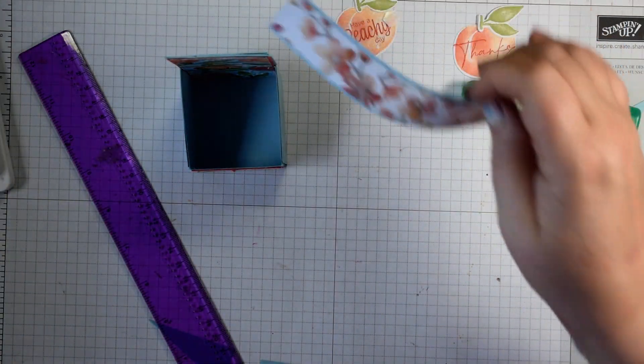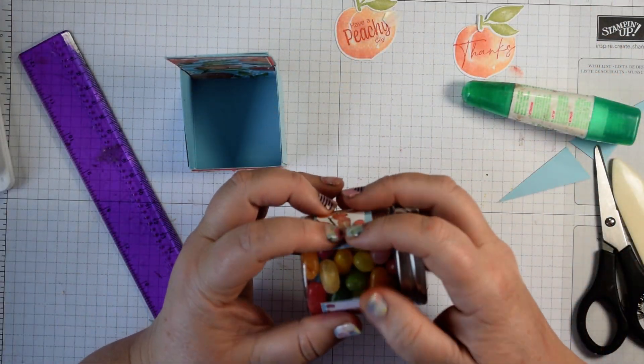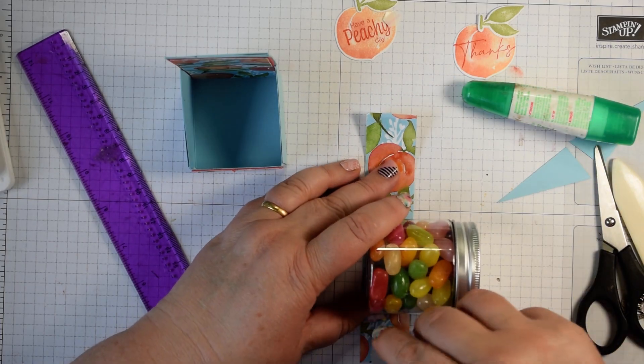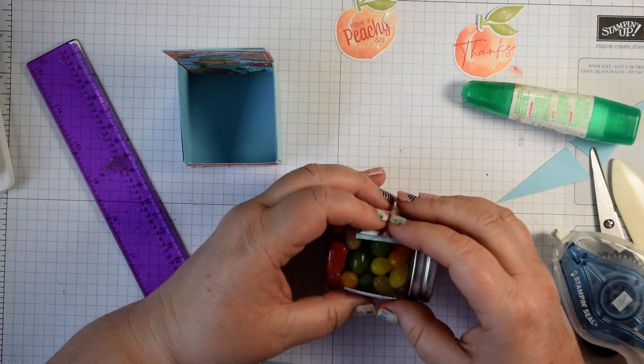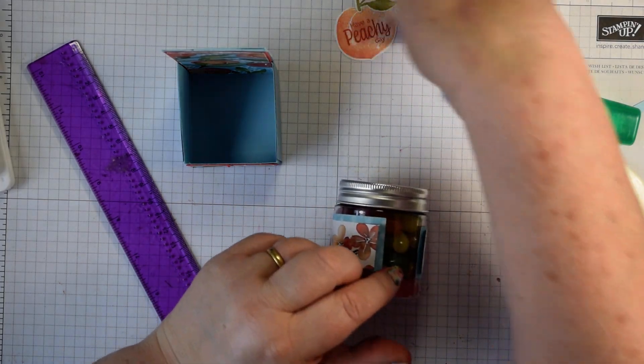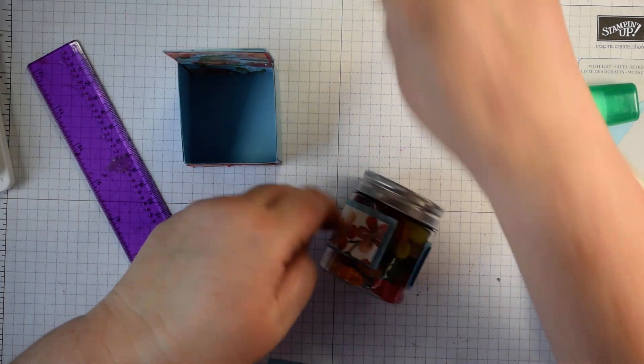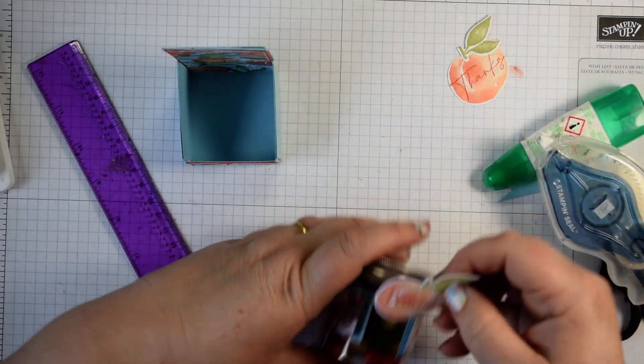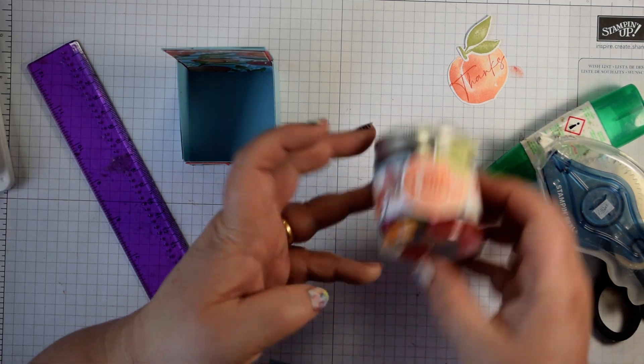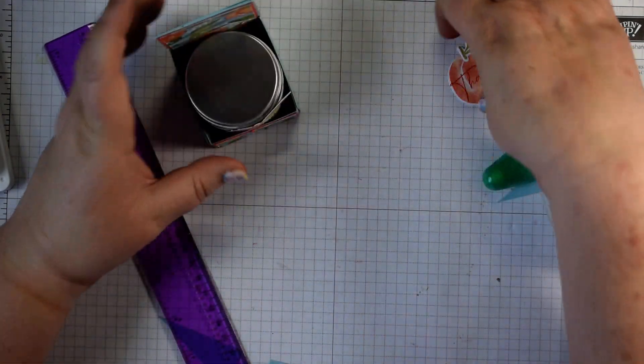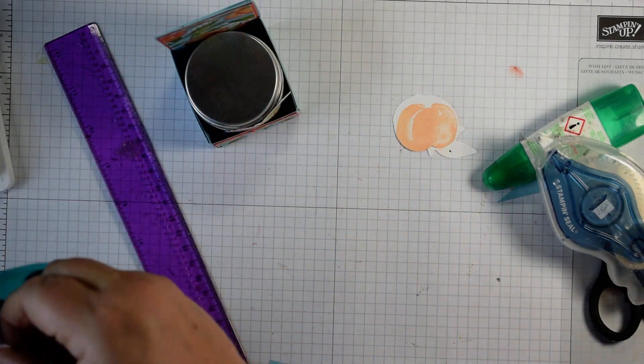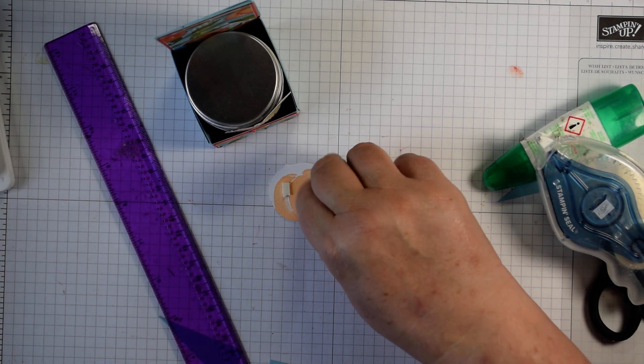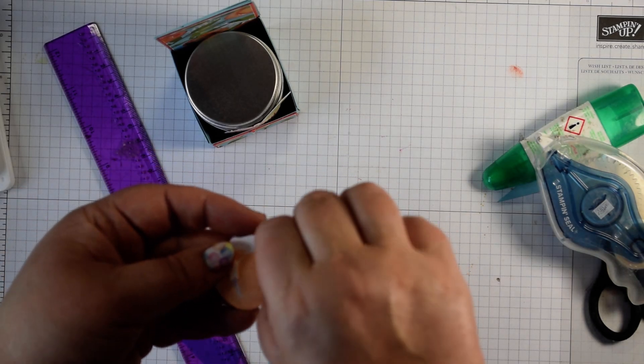And then all that remains is to add our band around here. So easiest thing, just add a little bit of seal plus to hold that in place. And then all I'm doing is just curving that around and adding a bit on each side. And that covers up the gap on that. Pop it in and then add dimensionals to the back. Like so.